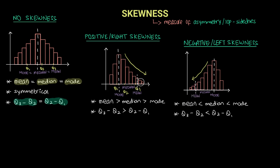Those extreme low values cause the mean to be pulled to the left. That is why the mean value is lower than the median value, which is in turn lower than the mode value — mean is less than median, which is less than mode. This is a property of negative skewness. For quartiles, Q1 lies on the left, Q2 somewhere in the middle, and Q3 towards the right where the majority of the data lies. The difference between Q1 and Q2 is much greater than the difference between Q2 and Q3, so Q2 minus Q1 is greater than Q3 minus Q2.